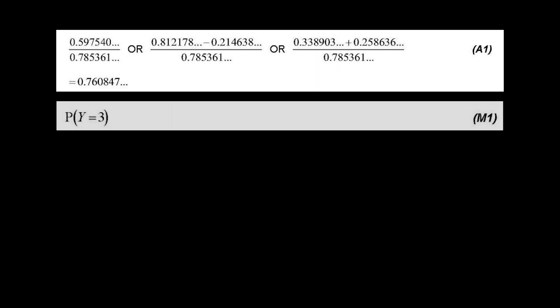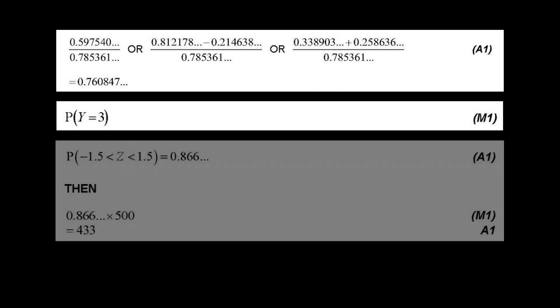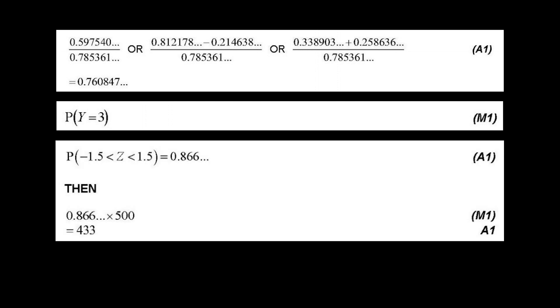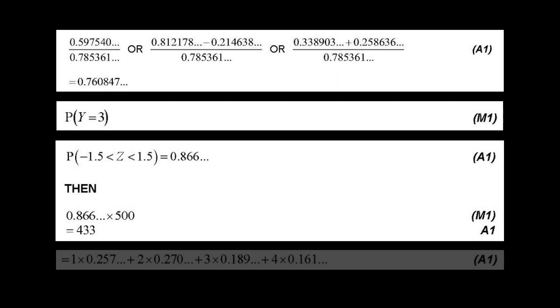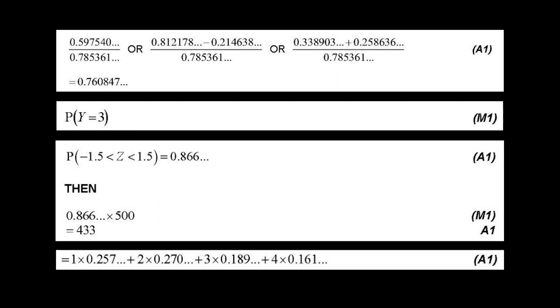When using a calculator for statistic questions, you will usually receive working marks if your answer is correct. However, if your answer is incorrect and there is no working shown, it will be scored as zero. Therefore, even for calculator questions, it is necessary to write a few lines by hand explaining what is being calculated. This way, even if the answer is wrong, you can still receive partial credit.